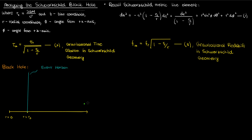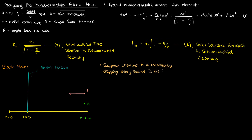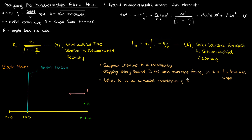Let's also suppose that we have an observer A who is fixed at infinity, and that we also have observer A's twin B, who isn't fixed but starts out at infinity and then travels in a straight radial path towards the event horizon. Suppose that while observer B is traveling towards the event horizon, he's consistently clapping once every second, so the proper time between claps in B's reference frame is one second. As observer B continues to travel towards the event horizon, the time between his claps is one second in his reference frame, so when B is at some radial coordinate r, the proper time between claps tau sub r is still one second.